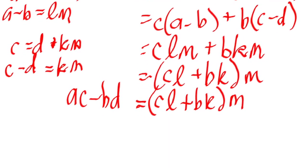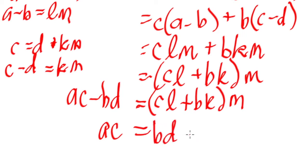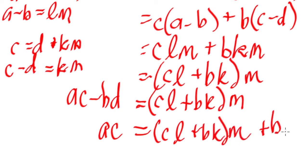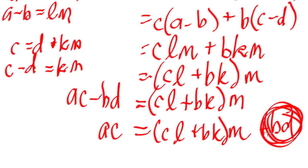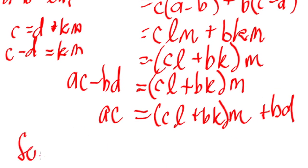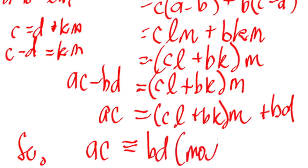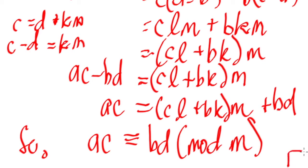Transposing BD to the other side: AC equals BD plus (CL plus BK) times M. By the division algorithm, M divides AC with quotient (CL plus BK) and remainder BD. Thus, by the definition of congruence, AC is congruent to BD mod M. By both parts of the theorem, the proof is now complete.